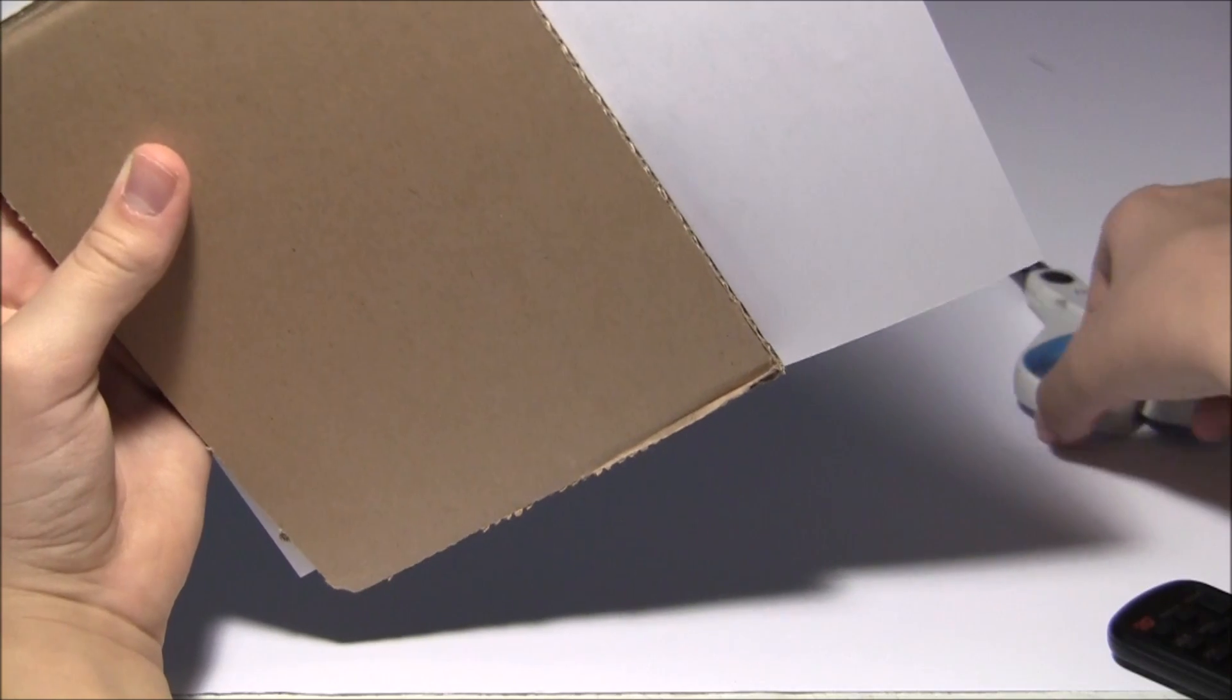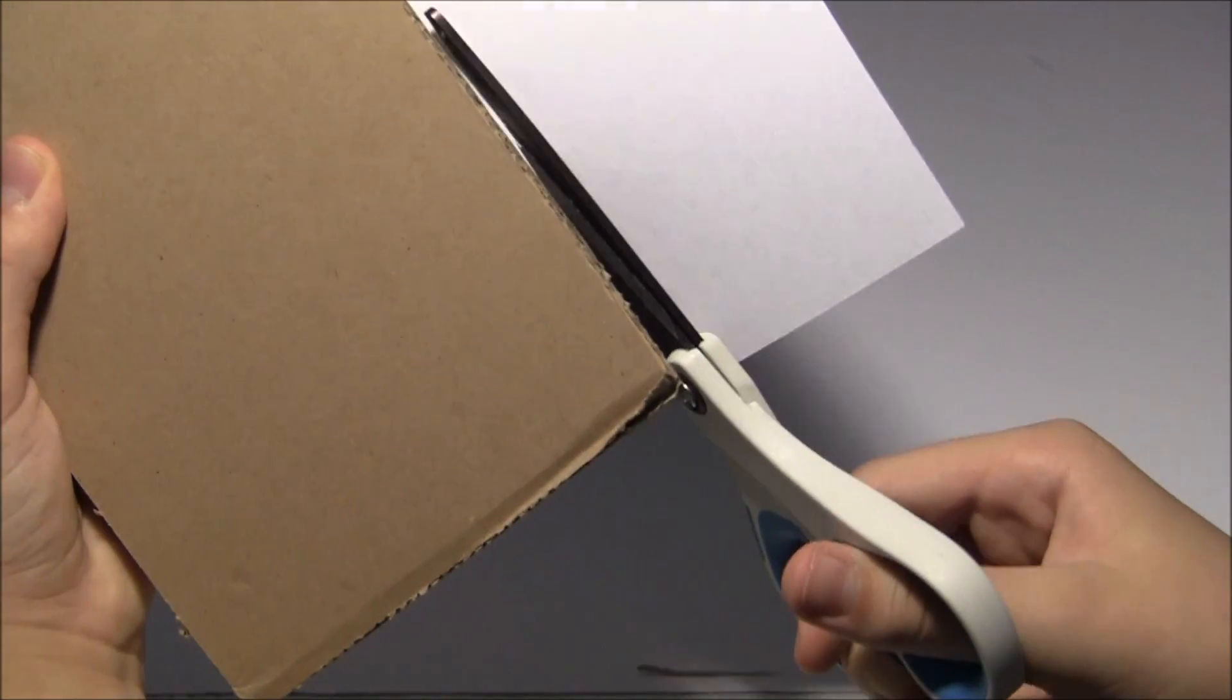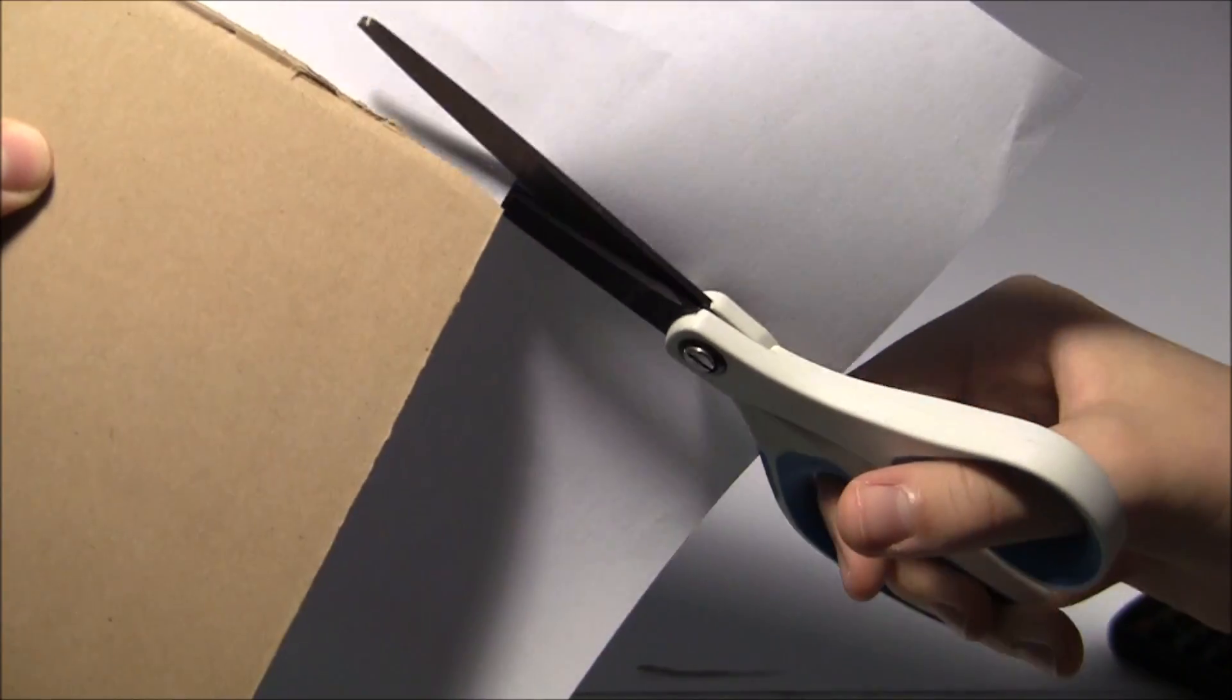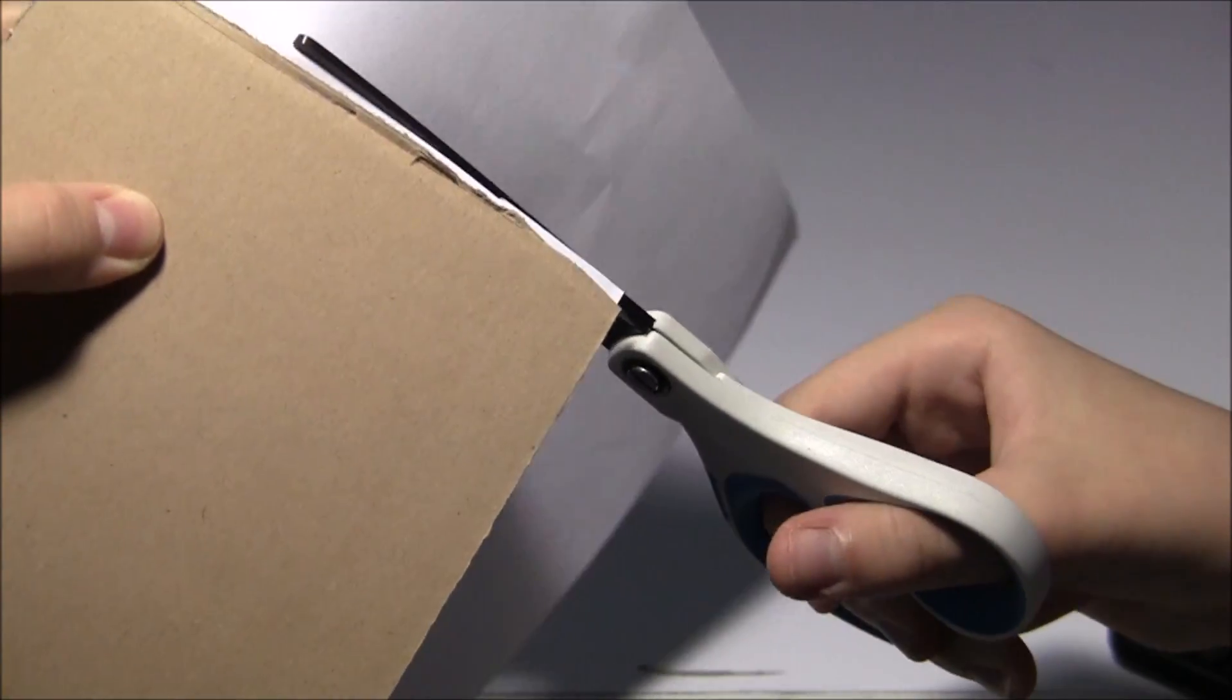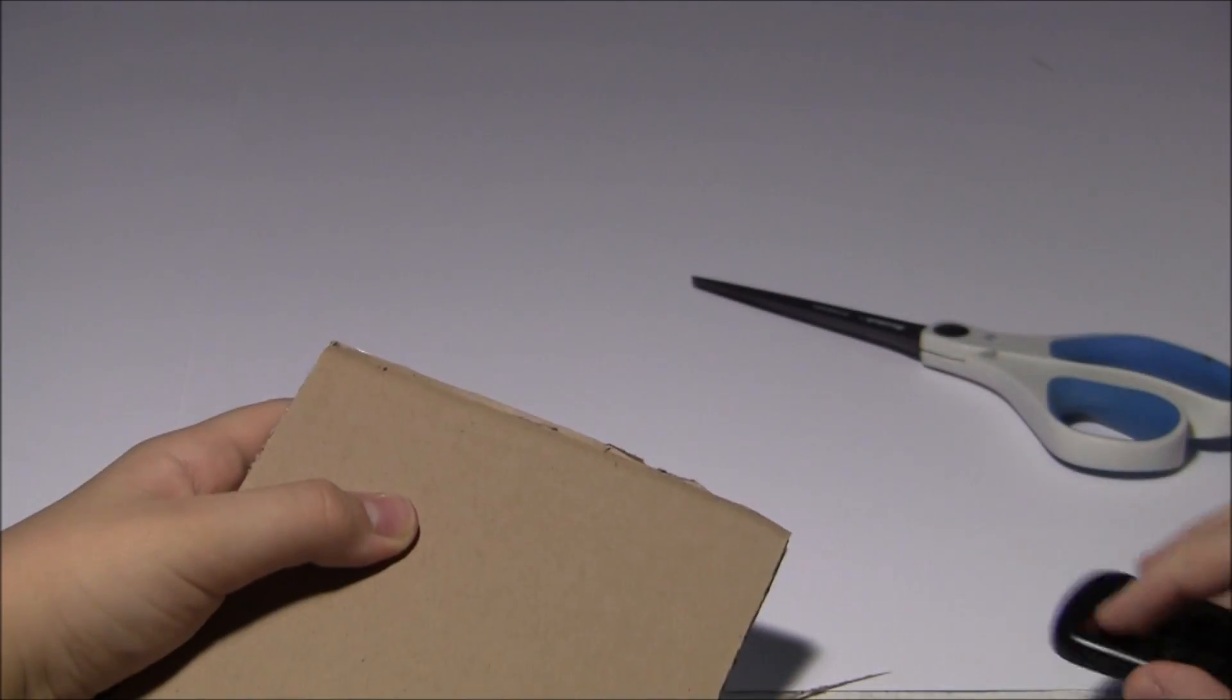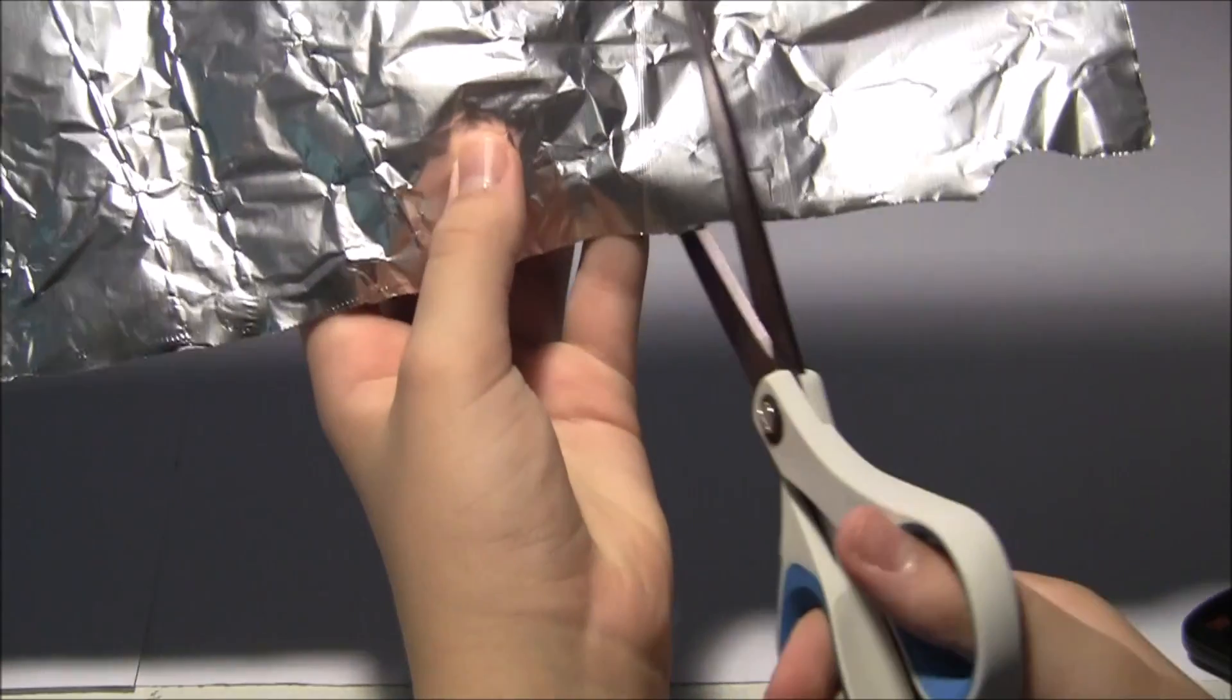Cut the paper to be just a little bit shorter than the cardboard. Now cut four squares out of the aluminum foil.